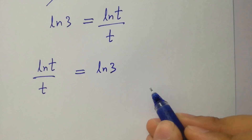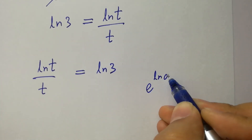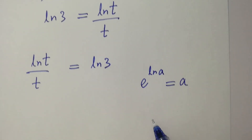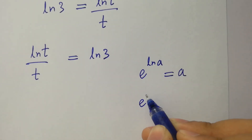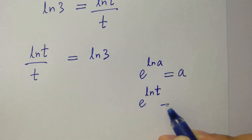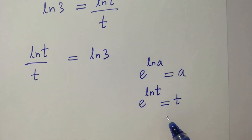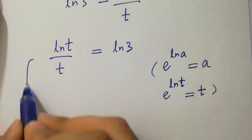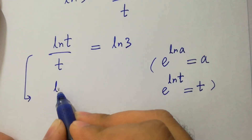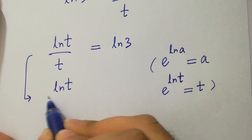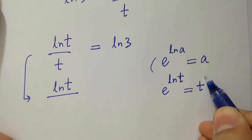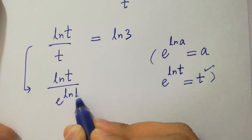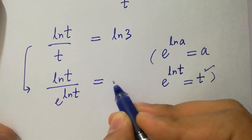Since e to the power ln(a) equals a, then e to the power ln(t) will be equal to t. So here we have ln(t) over t equal to e to the power ln(t) over t, which equals ln(3).